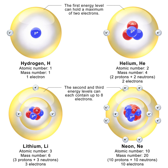The antineutron is the antiparticle of the neutron. It was discovered by Bruce Cork in the year 1956, a year after the antiproton was discovered. CPT symmetry puts strong constraints on the relative properties of particles and antiparticles, so studying antineutrons provides stringent tests on CPT symmetry. The fractional difference in the masses of the neutron and antineutron is 9 ± 6 × 10⁻⁵. Since the difference is only about two standard deviations away from zero, this does not give any convincing evidence of CPT violation.